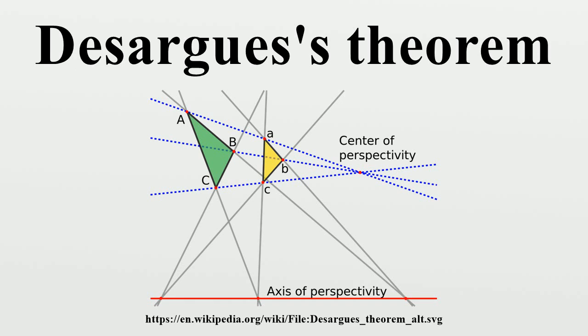Central perspectivity means that the three lines AA', BB', and CC' are concurrent at a point called the center of perspectivity.